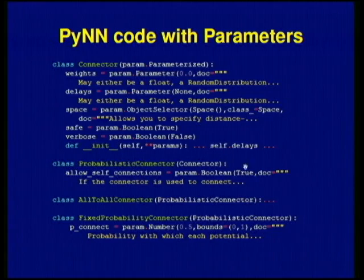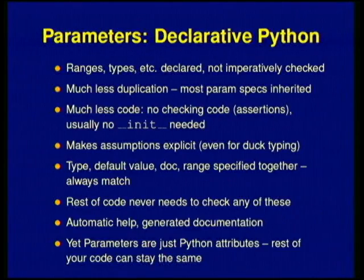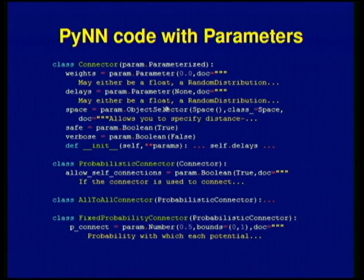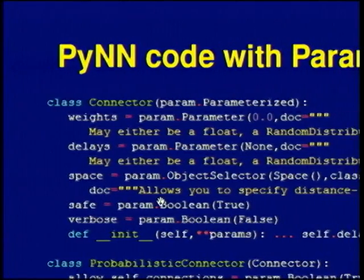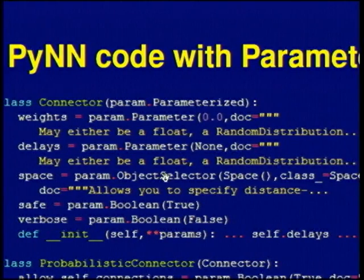Let's look at an example. Here's the same code I showed you — this plus this plus this — re-implemented using something fairly similar to traits, all on one page. It does exactly what the other code does. What we do instead: if something's going to be Boolean, we declare it to be Boolean, just as you might in a statically typed language. If something is going to be a certain type of object, you declare that. If something's going to have a documentation string, you specify that when you first specify that parameter.